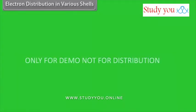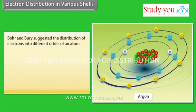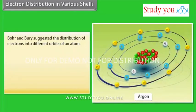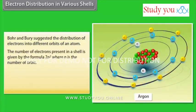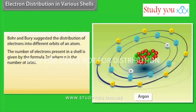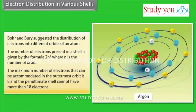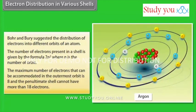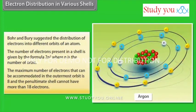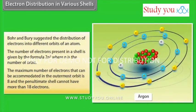Electron distribution in various shells. Bohr and Bury suggested the distribution of electrons into different orbits of an atom. The number of electrons present in a shell is given by the formula 2N², where N is the number of orbit. The maximum number of electrons that can be accommodated in the outermost orbit is 8, and the penultimate shell cannot have more than 18 electrons.